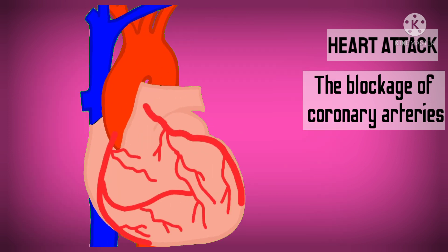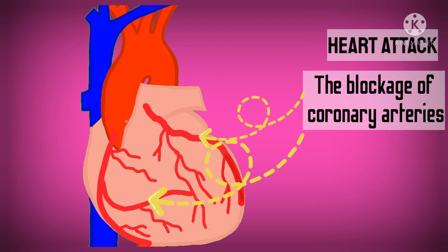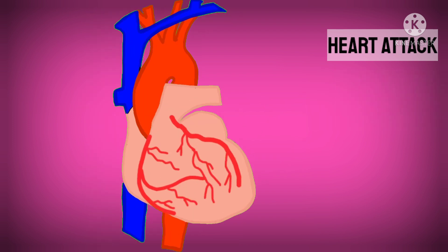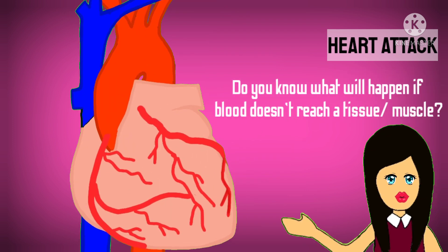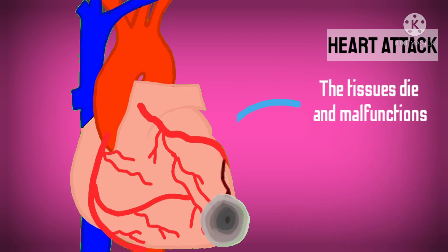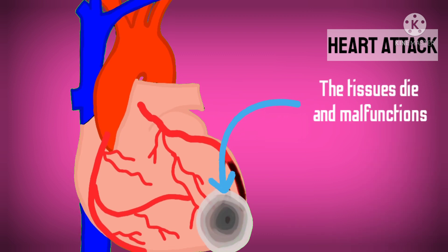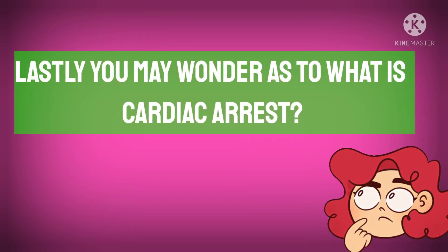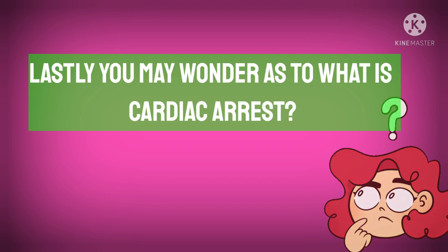The coronary arteries are the arteries that supply blood to the heart muscles themselves. Do you know what will happen if blood does not reach a tissue or muscle? Well, they die. And dead tissues are not going to work, so that part of the heart which is damaged is going to malfunction.